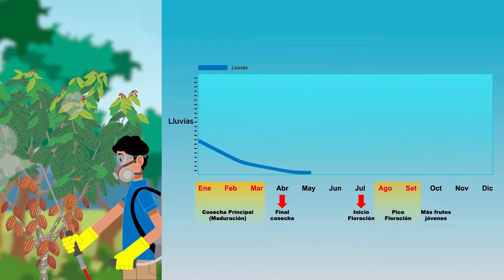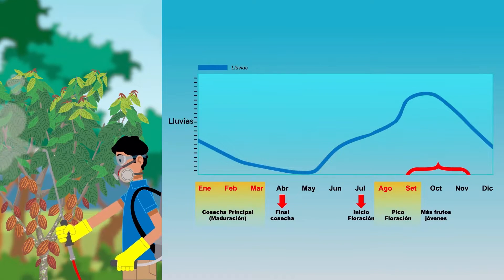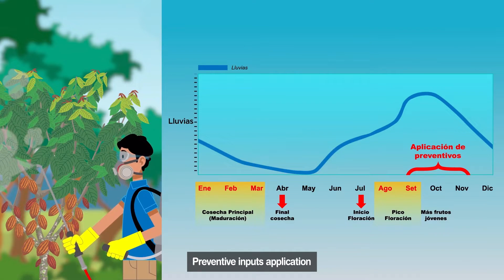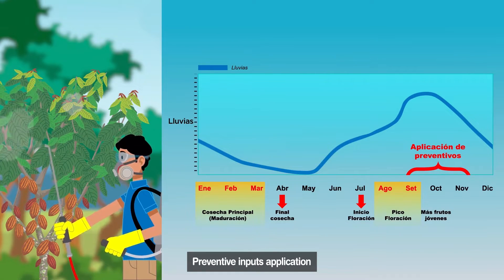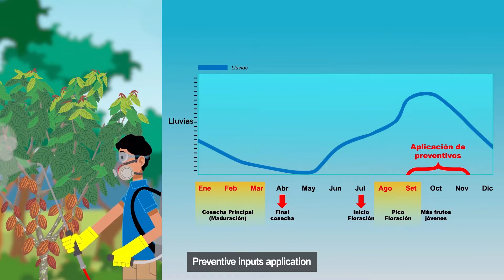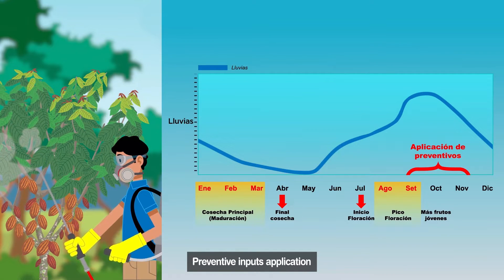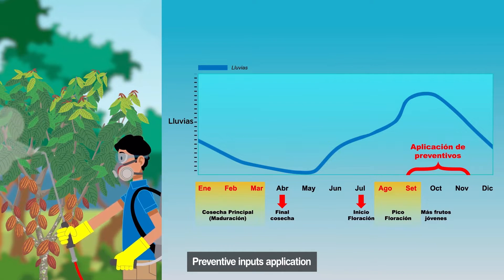If feasible, we recommend applying preventative inputs to our plants, like a copper-based product or biological agents. These preventative inputs can be applied one month after the abundant flowering to protect the growing fruits. If possible, make another application three months later.